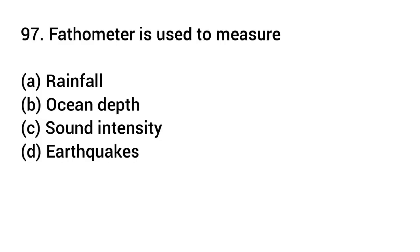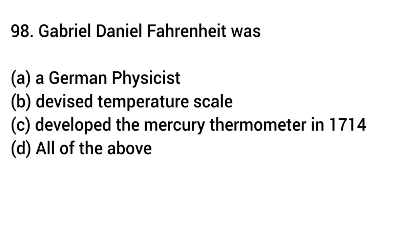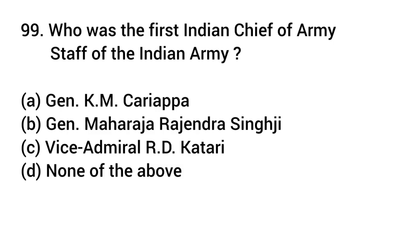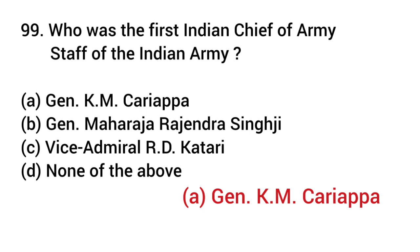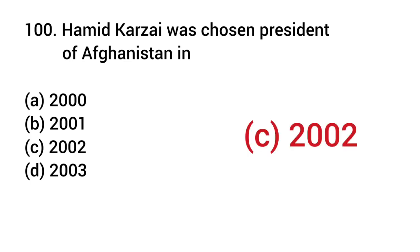Fathometer is used to measure? Answer: Ocean depth. Gabriel Daniel Fahrenheit was? Answer: All of the above — a German physicist who devised a temperature scale and developed the mercury thermometer in 1714. Who was the first Indian Chief of Army Staff of the Indian Army? Answer: General K.M. Cariappa. Amit Karzai was chosen President of Afghanistan in? Answer: 2002.